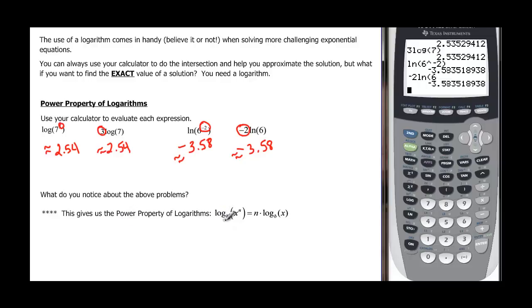The power property says log base b of x to the n. There's an exponent inside the parenthesis. Then that's equivalent to n, that exponent, times the log of base b of just the x. So the exponent comes out front.